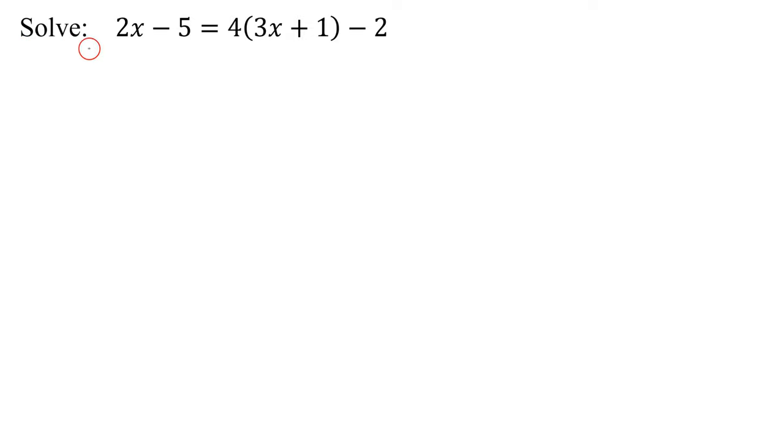In this example, we need to solve 2x minus 5 equals 4 times the quantity 3x plus 1 minus 2.